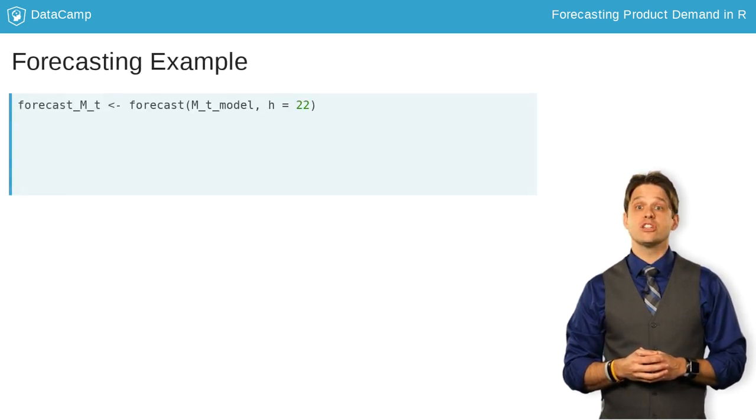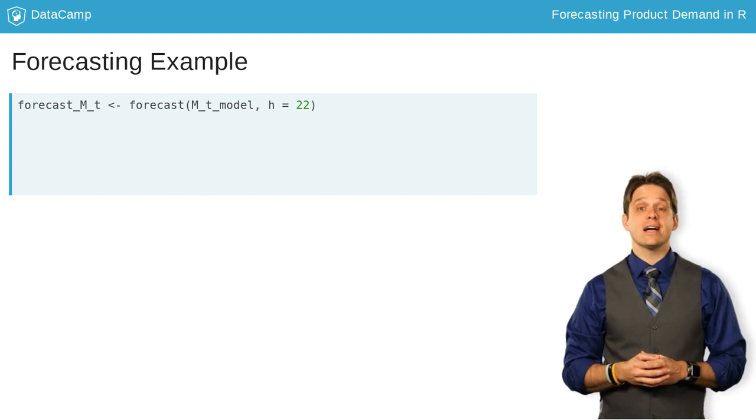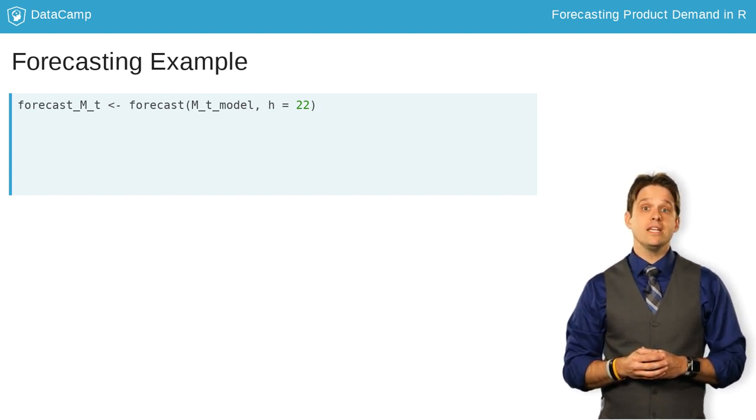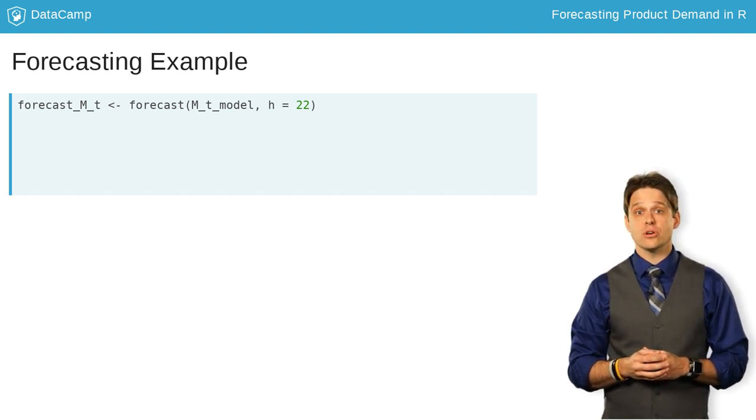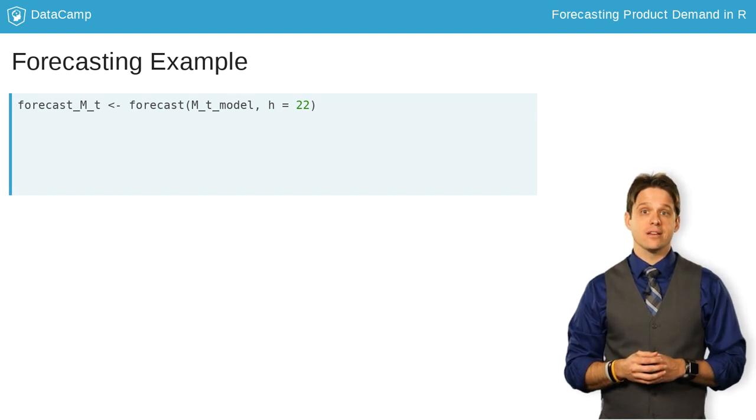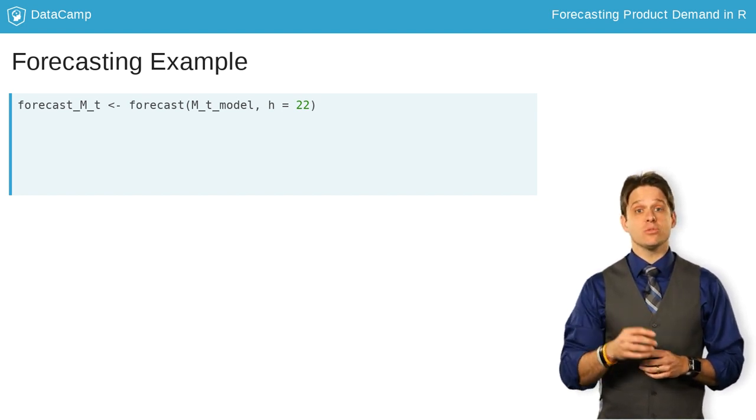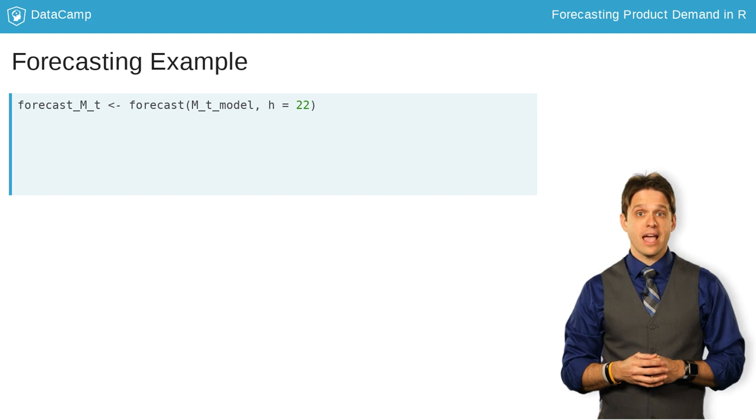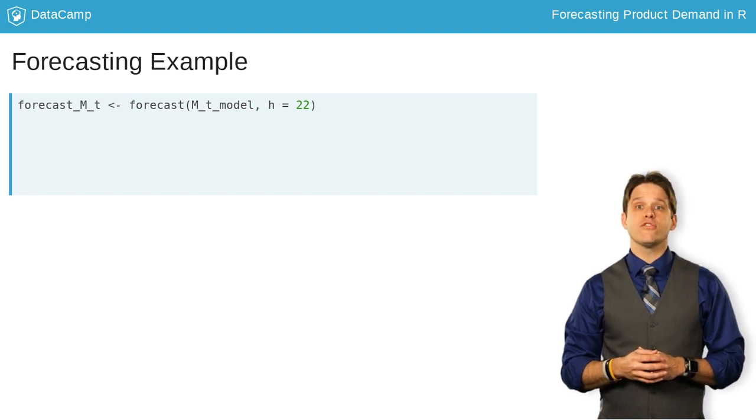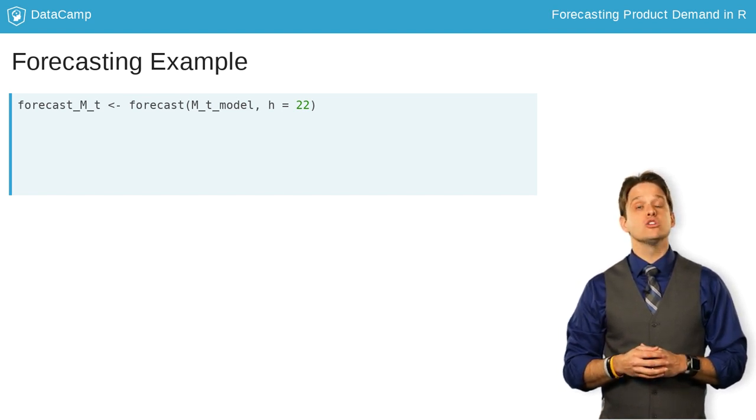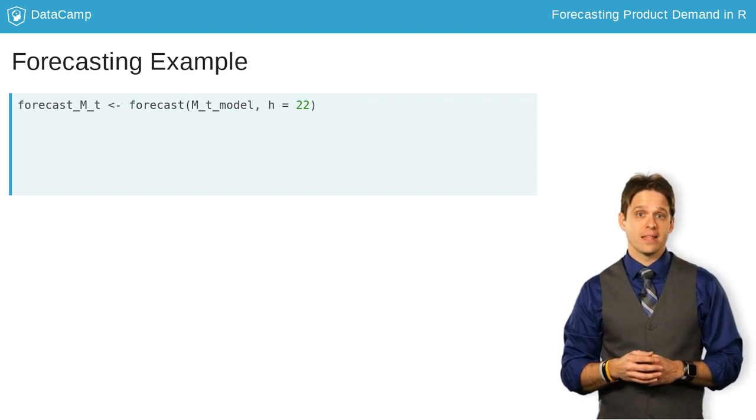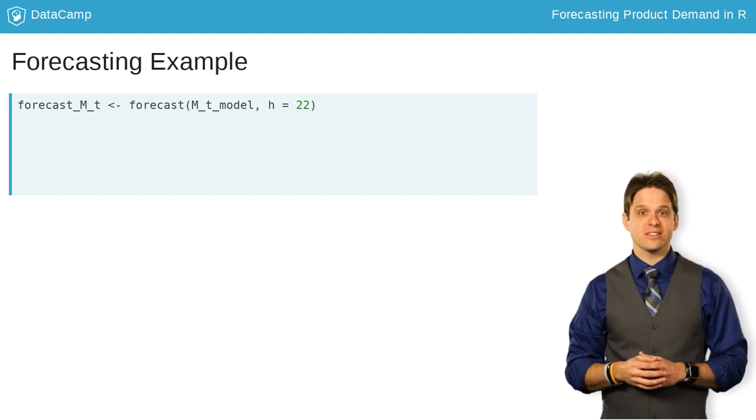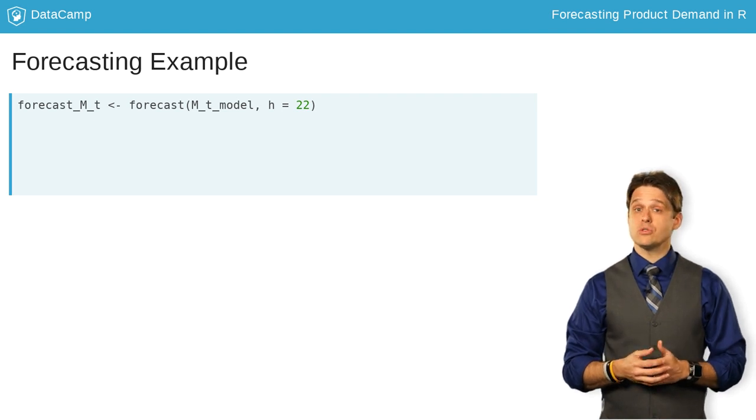The forecast function in R makes forecasting time series models easy to do. You need to put in your model object as well as how many time periods into the future you would like to forecast. That is the h equals option. As you can see here, we want to forecast our time series model 22 observations into the future. Let's visualize this forecast. You could just use the plot function,